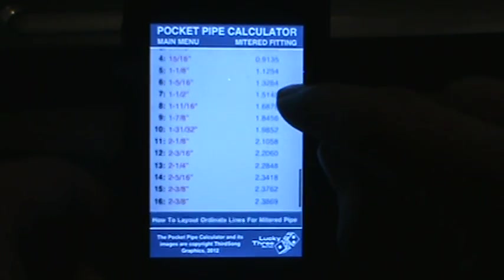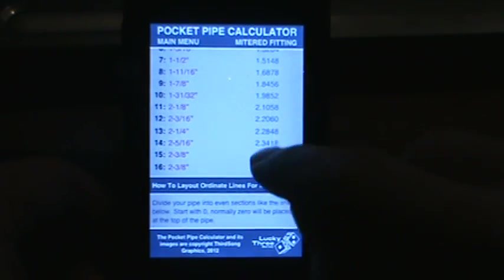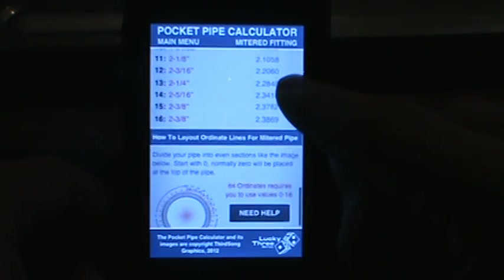We scroll down. Here are your sixteen ordinates. We had selected 64 at the top and you scroll down you have your information as well.